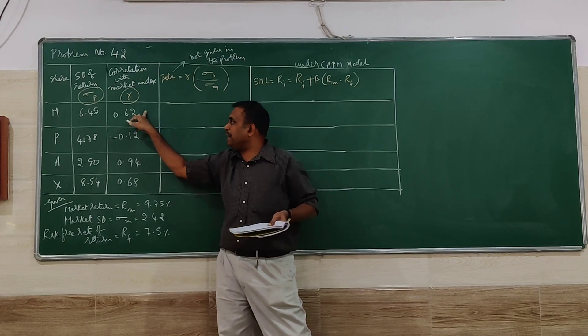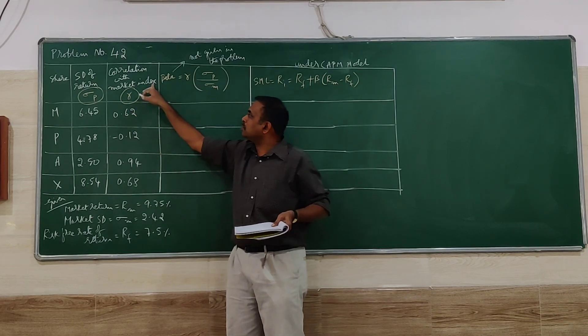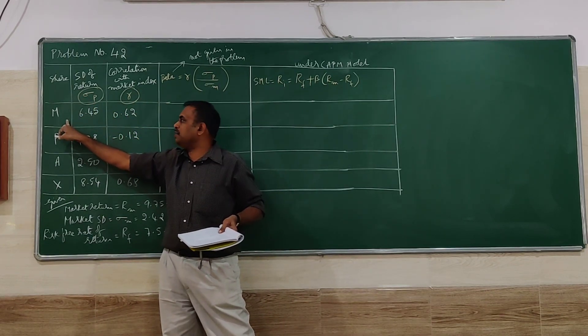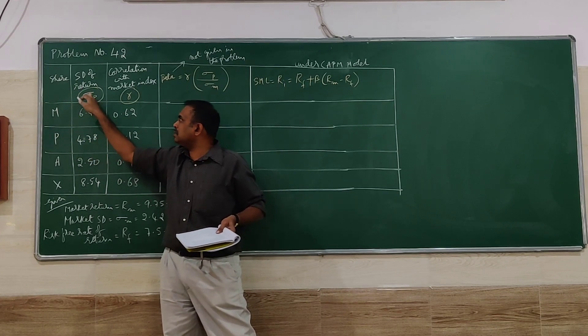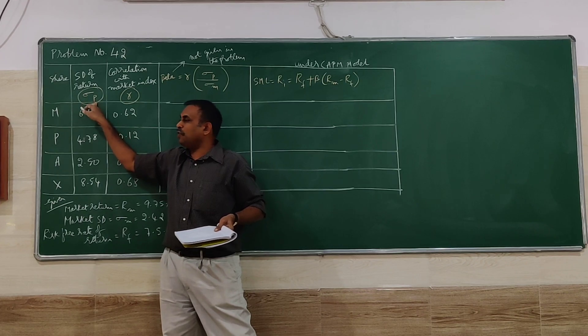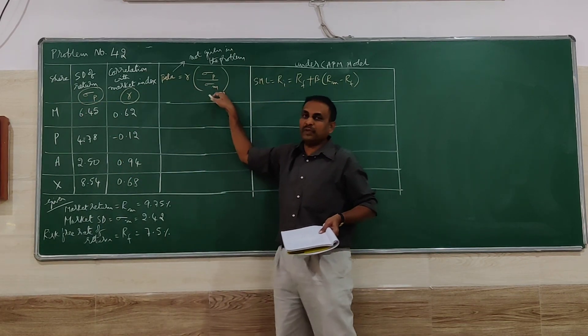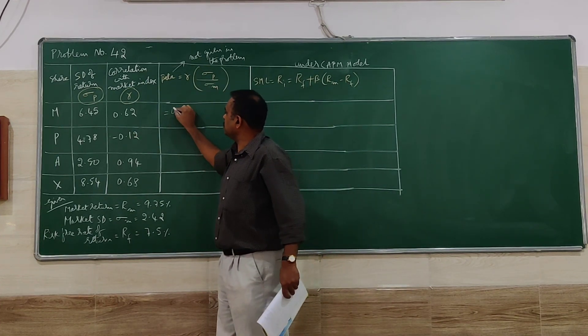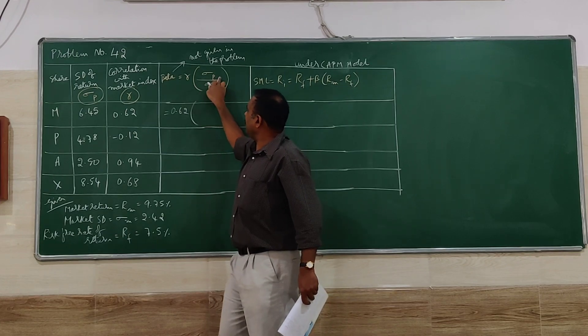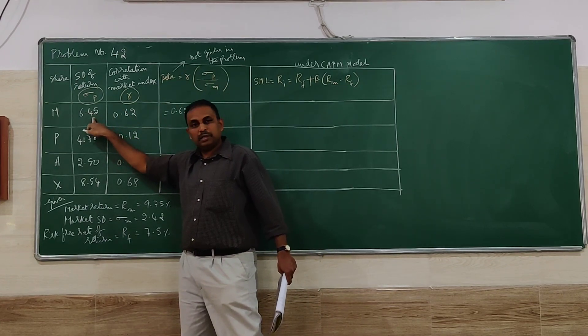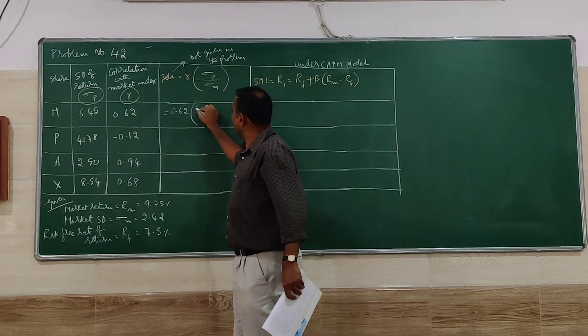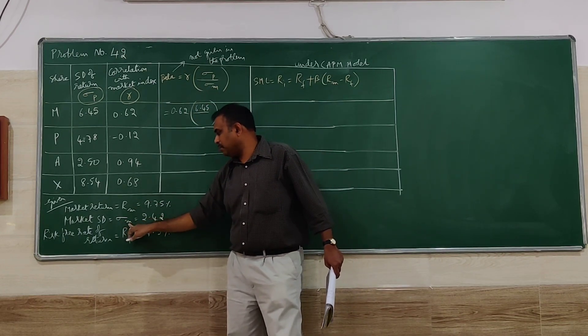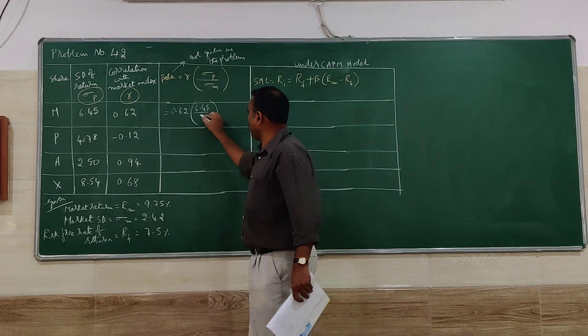So we have to find out the beta value. Instead of beta we have a correlation value. Correlation with market index R, and SD of return of every individual stock. So with the help of that we have to find the beta value. R is correlation 0.62, standard deviation of P (individual share's SD), divided by standard deviation of M (market) 0.42.